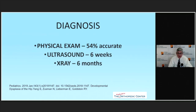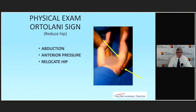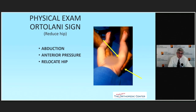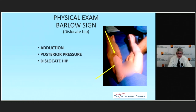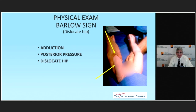The two classic maneuvers are the Ortolani and the Barlow. With the Ortolani, you abduct the hip and apply anterior pressure to try to reduce the hip — you always do this first, because if the hip is dislocated you won't feel anything when trying to dislocate it further. With the Barlow, you adduct the hip and apply posterior pressure to try to dislocate it. It's important to determine if the hip is dislocated initially, as that makes for a worse prognosis.